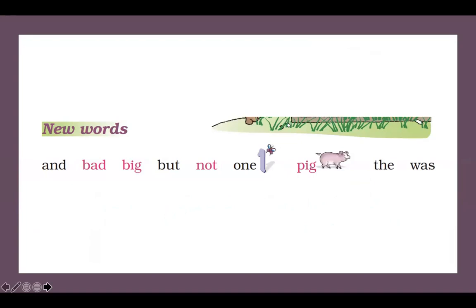Okay, new words. And — a-n-d, and. Bad — b-a-d, bad. Big — b-i-g, big. But — b-u-t, but. Not — n-o-t, not. One — o-n-e, one. Pig — p-i-g. The — t-h-e, the. Was — w-a-s, was.